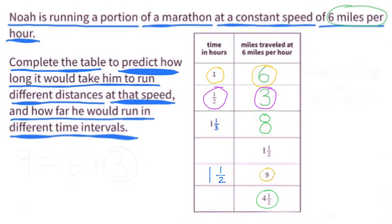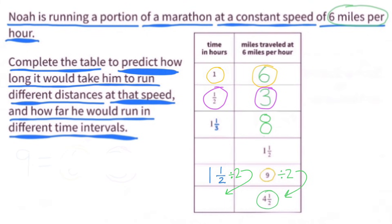One way to figure out 4 and 1 half miles traveled at 6 miles per hour: 4 and 1 half is exactly half of 9. So 9 divided by 2 equals 4 and 1 half, and 1 and 1 half divided by 2 equals 3 fourths of an hour.